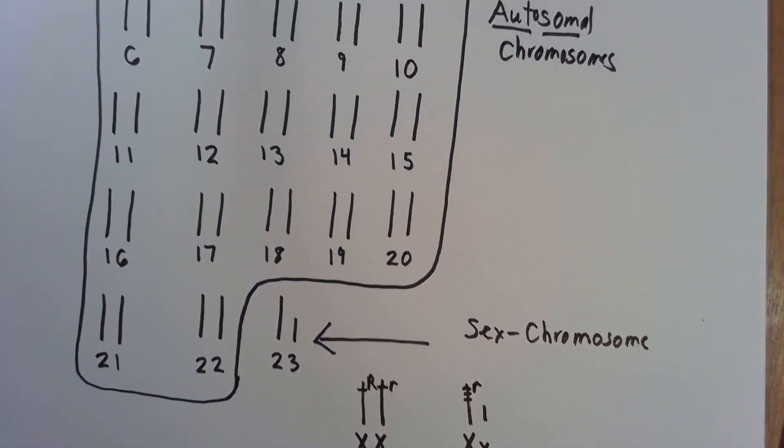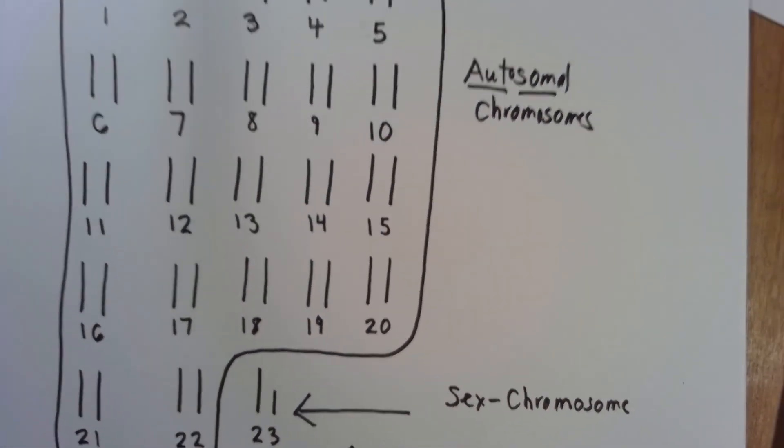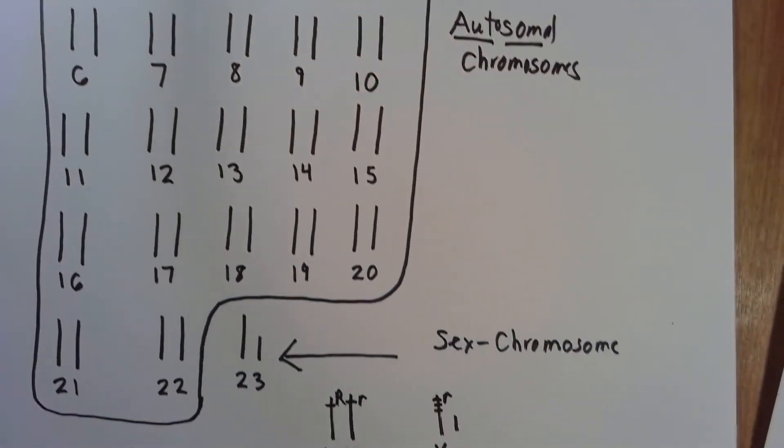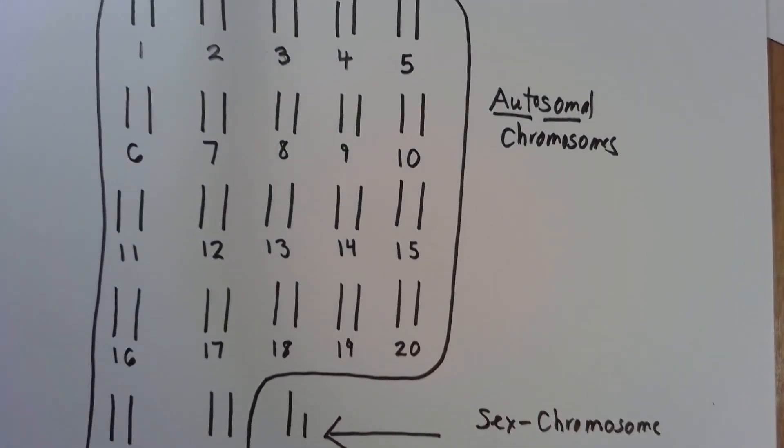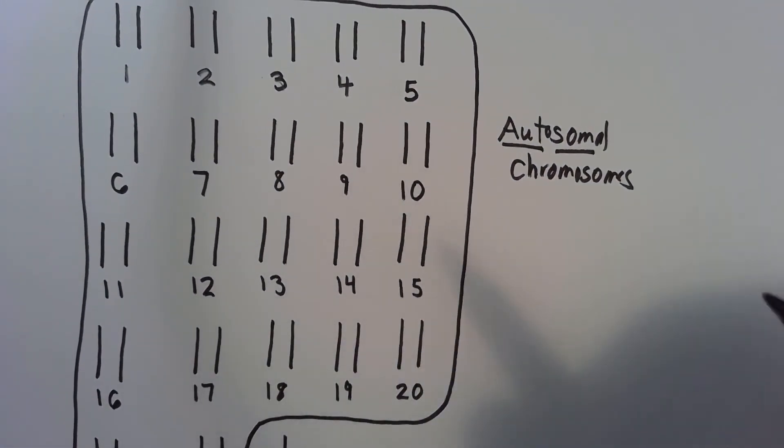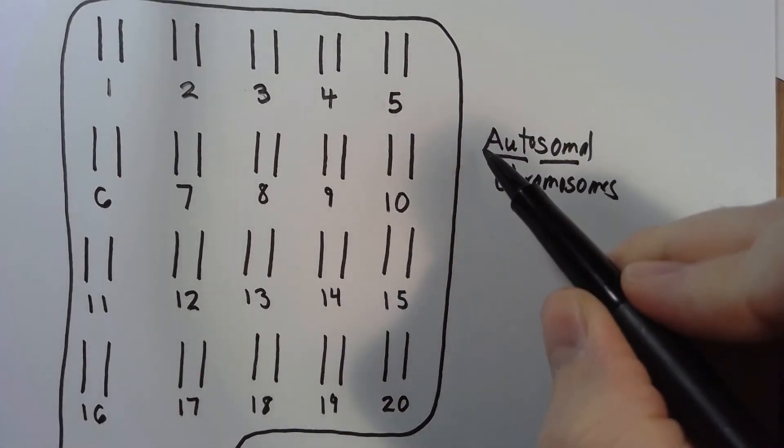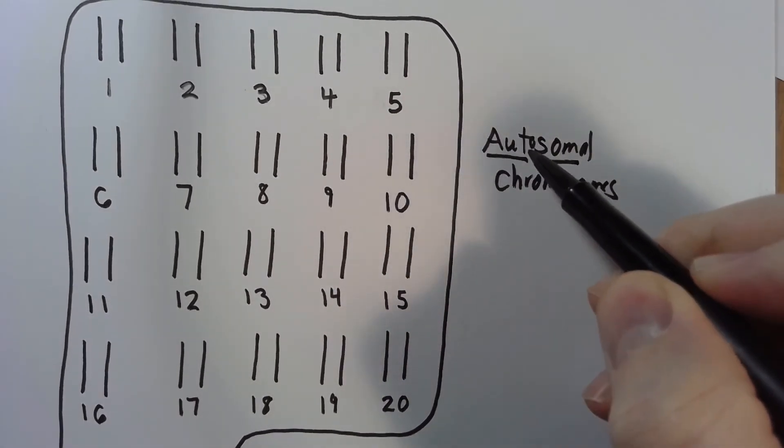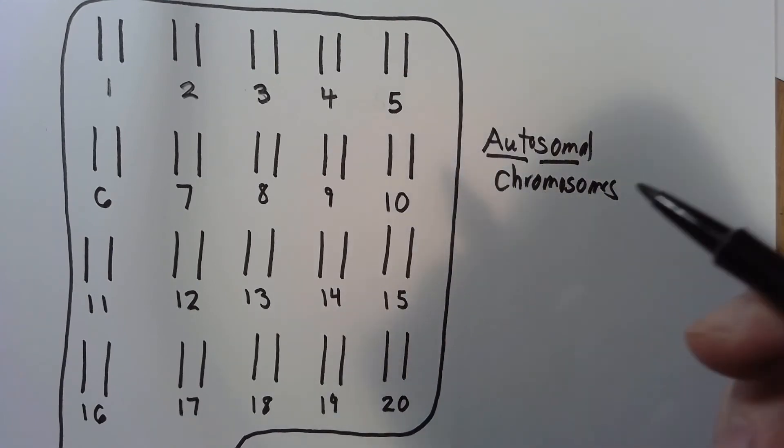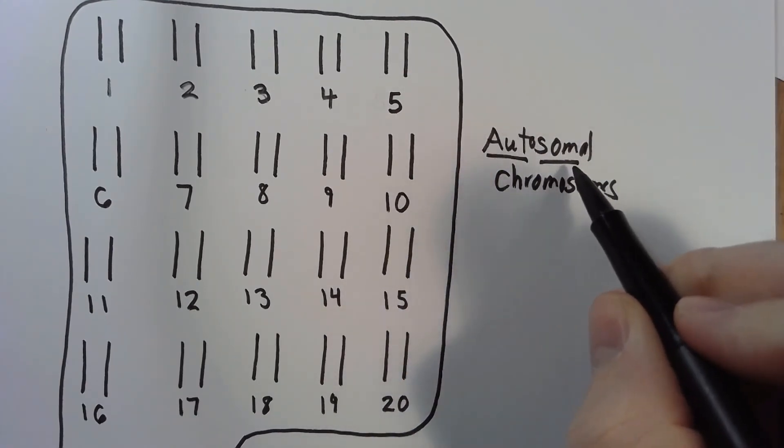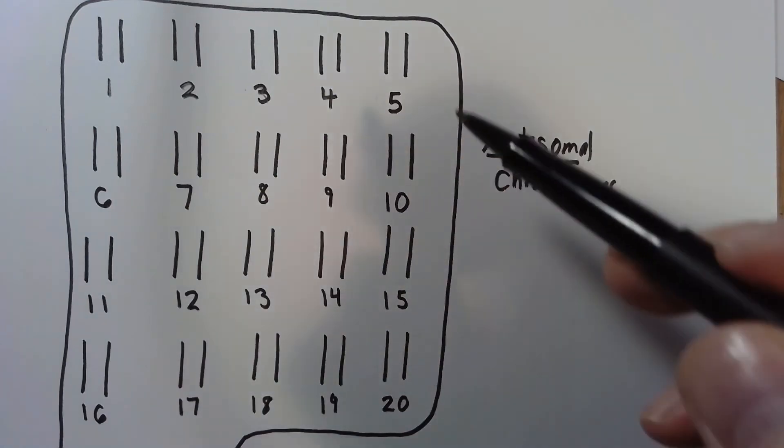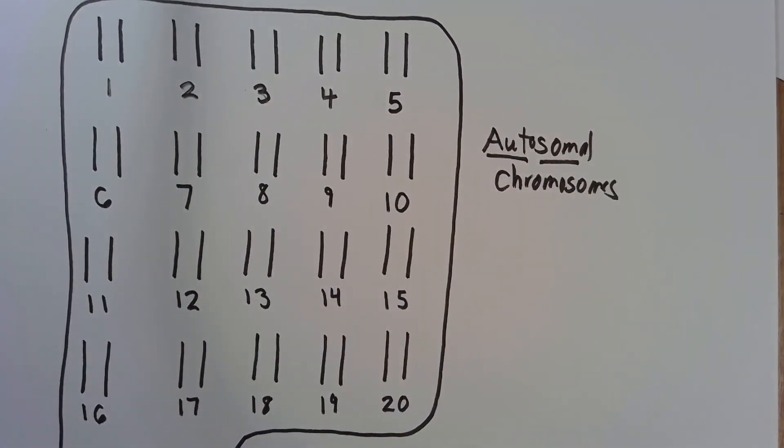So in this video, we covered some vocabulary. We covered autosomal chromosomes versus sex chromosomes. Autosomal, by the way, strange word. And the reason why, the entomology behind the word is auto means ordinary or similar, like when we go on autopilot. And soma means body. So these are just your ordinary genes that code for your body. And that's what that word comes from.